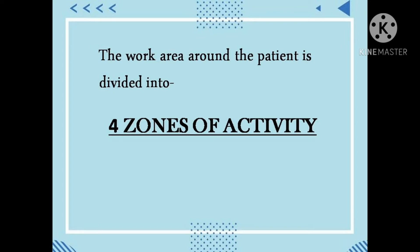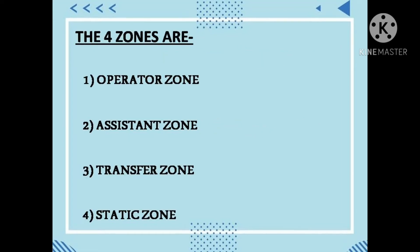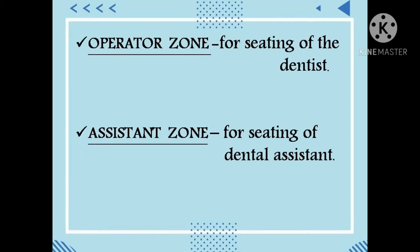For practicing four-handed dentistry, the work area around the patient is divided into four zones of activity: the operator zone, the assistant zone, the transfer zone, and the static zone. The operator zone is meant for the seating of the dentist, who moves their chair within this zone depending on the arch or tooth being worked on. The assistant zone is meant for the seating of the dental assistant.